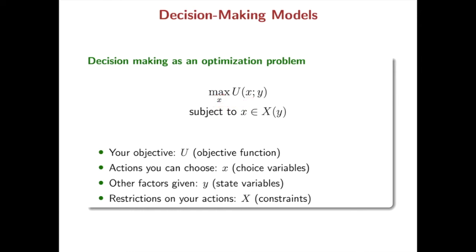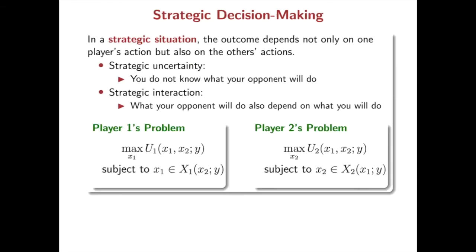Of course, this objective function also depends on some other variables which you cannot control. Now, let's think about a little bit more complicated situation, so-called a strategic situation. In a strategic situation, the outcome or the objective depends not only on your own action, but also on others' action.